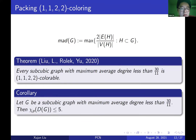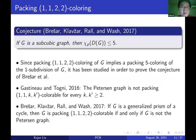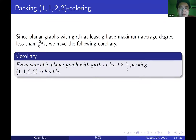As a corollary, for any subcubic graph G with maximum average degree less than 30/11, the conjecture is confirmed for this subclass. Since planar graphs with girth at least g have maximum average degree less than 2g/(g−2), every subcubic planar graph with sufficiently large girth is packing 1-1-2-2 colorable.